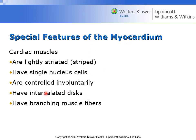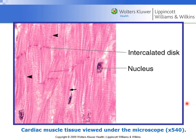The myocardium also has intercalated discs, which are very important for conducting the electrical activity associated with the heart. It also has branched muscle fibers. The striations are visible, and most noticeably, the darker striations — the intercalated discs — are the hallmark for recognizing cardiac tissue and differentiating it from other tissue types.